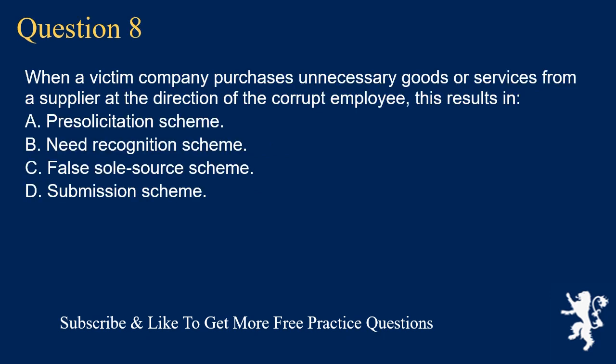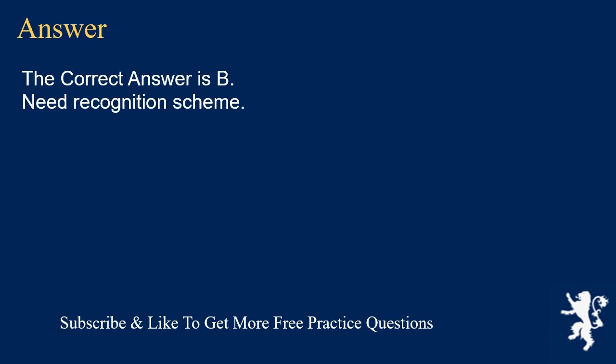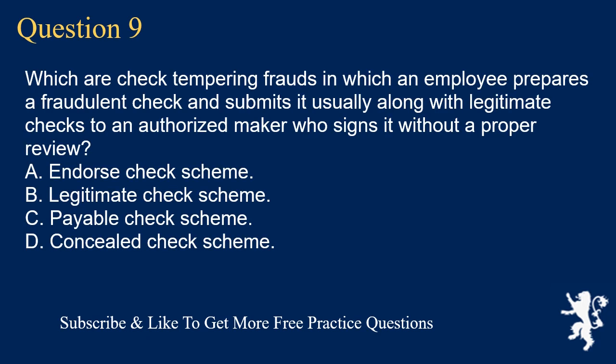Question 8: When a victim company purchases unnecessary goods or services from a supplier at the direction of the corrupt employee, this results in: A. Pre-solicitation scheme. B. Need recognition scheme. C. False sole source scheme. D. Submission scheme. The correct answer is B. Need recognition scheme.